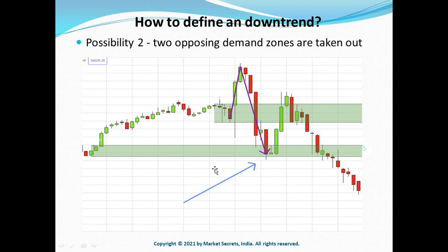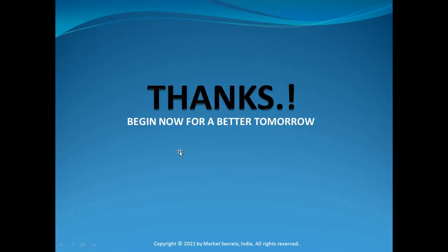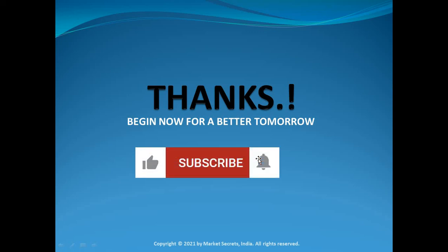To summarize: a downtrend has officially begun if one demand zone is taken out and we are able to draw a bearish trend line, or if price takes out two demand zones. We can see the other two scenarios in the next sessions. Hit the like button if you liked this video, share it with your friends, subscribe to our YouTube channel, and click the bell icon to get notified. Thanks for watching — have a great day, goodbye.